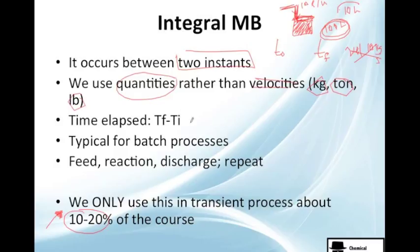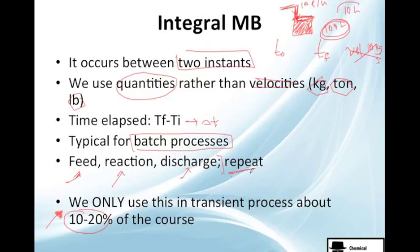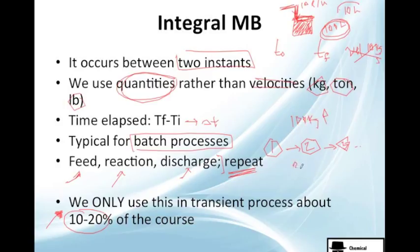The time elapsed is very simple: final time minus initial time gives you the change in time. Integral mass balance is typical for batch processes, which are transient processes. The challenge is you need to feed, react, discharge, and repeat the cycle — it's not continuous. You do one cycle, then a second, then a third, continuing until you reach your desired quantity.